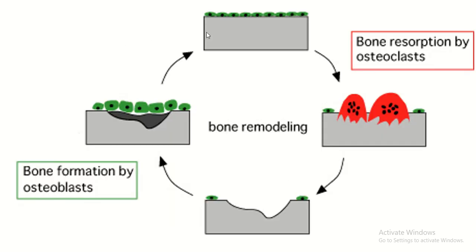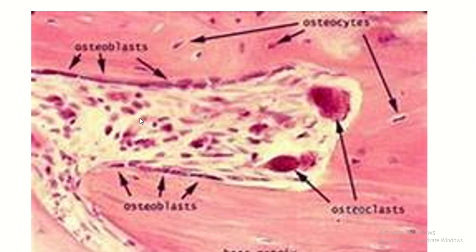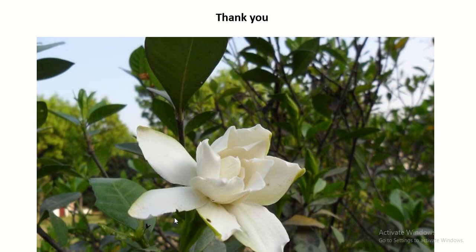In this diagram of bone, the osteoprogenitor cell breaks down the bone matrix as osteoclast, while the osteoprogenitor cell is also converted into osteoblast. This is the osteoblast and this is the osteoclast. Thank you for watching.